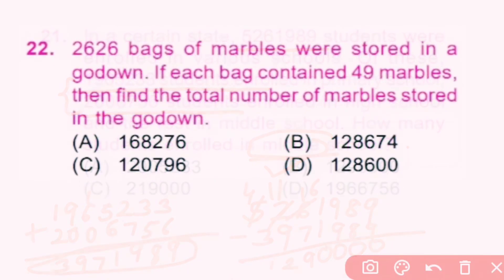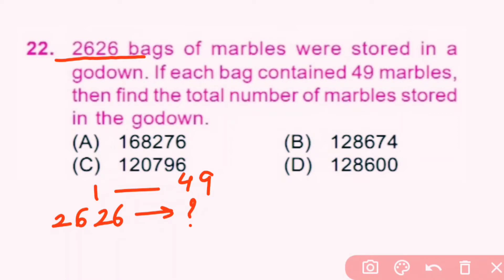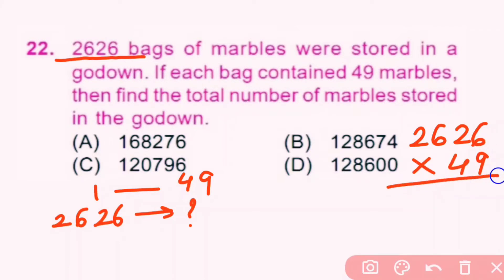Question number 22: 2,626 bags of marbles were stored in a godown. If each bag contains 49 marbles, find the total number of marbles. We multiply 2,626 × 49, which gives 1,28,674 marbles. B is the correct answer.